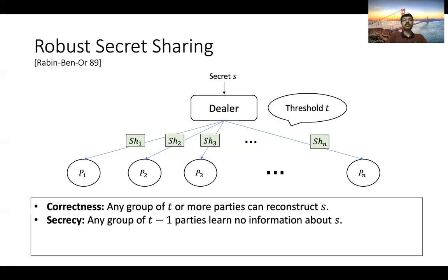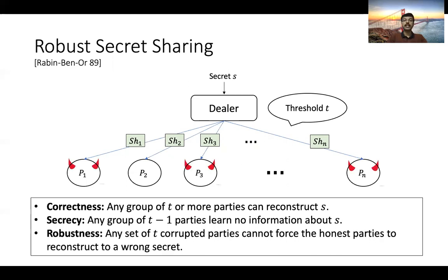Robust secret sharing was introduced by Rabin and Ben-Or in 1989. It is just like any other threshold secret sharing scheme satisfying both the correctness and secrecy properties. In addition, we require a third property — the robustness property. Roughly speaking, this robustness property requires that any group of T corrupted parties who might deviate arbitrarily from the protocol cannot force an honest party to reconstruct to a wrong secret.